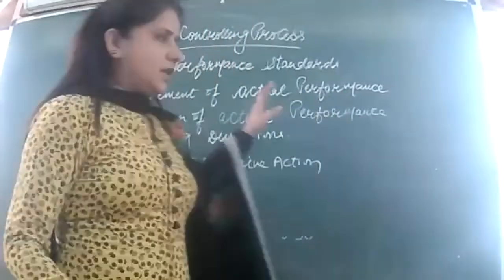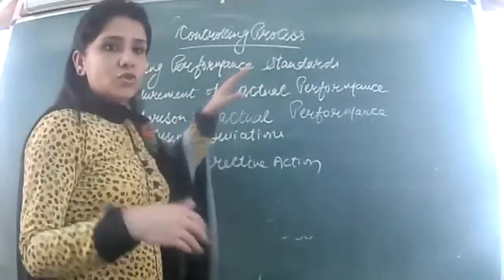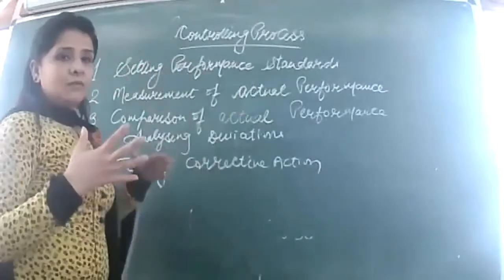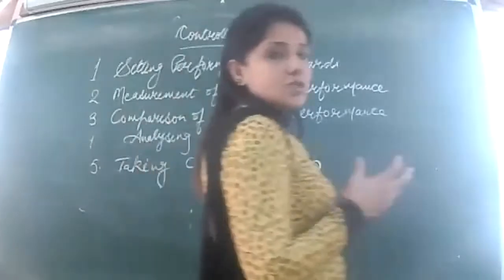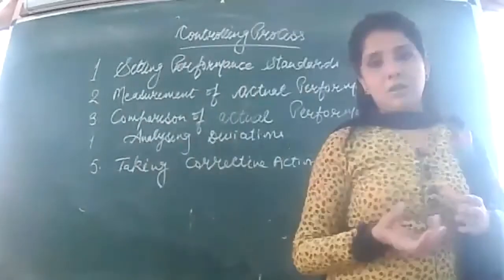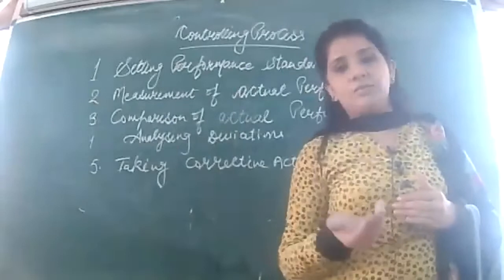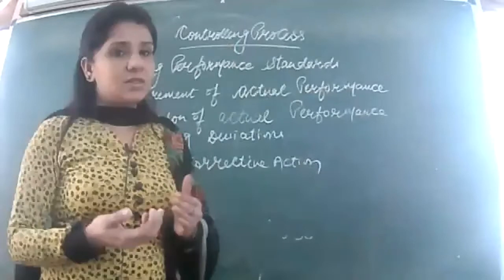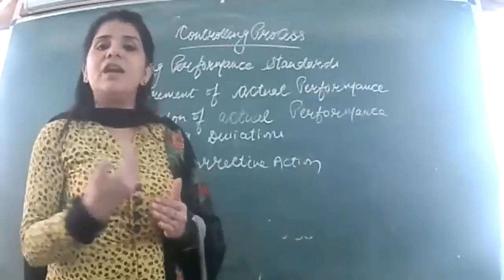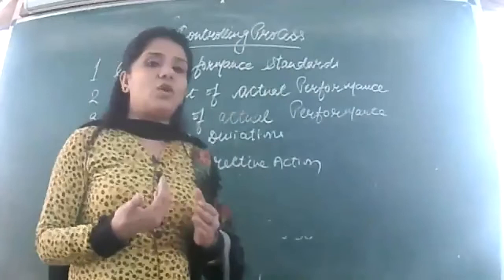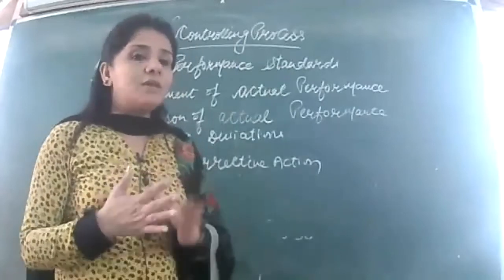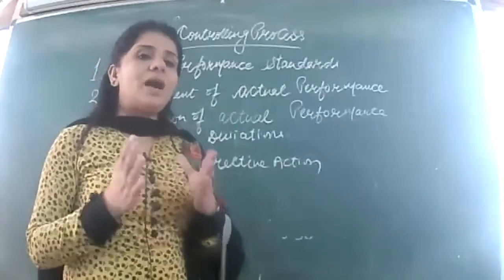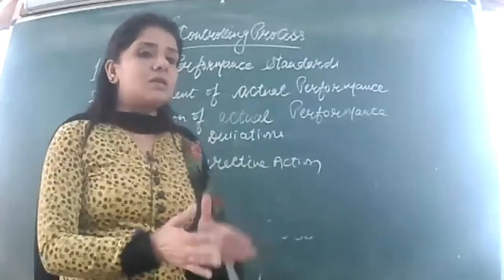Yesterday we were discussing about this controlling process. I'm going to recall things once again. Controlling means you just have to keep a check, and time to time you will be checking them — the employees — when they are actually performing their job. You just need to check whether they are near a target or they have achieved the target. Because ultimately, whatever we want them to achieve, that we need to check. Otherwise they will become lethargic, idle, and will not be putting their sincere efforts.